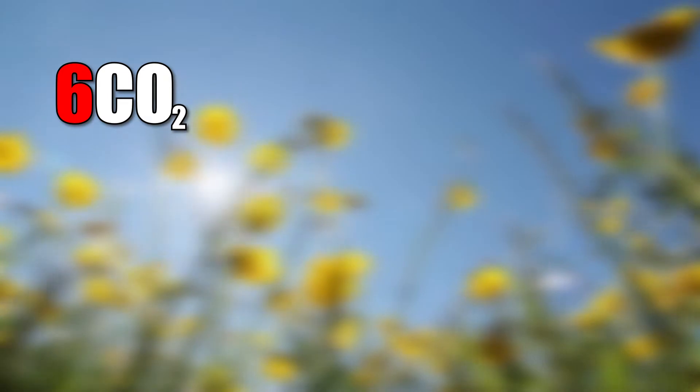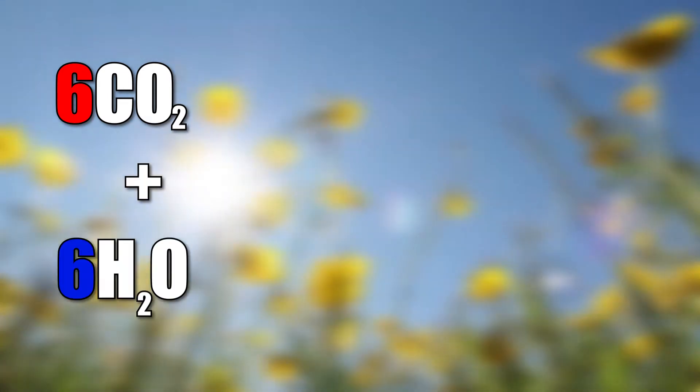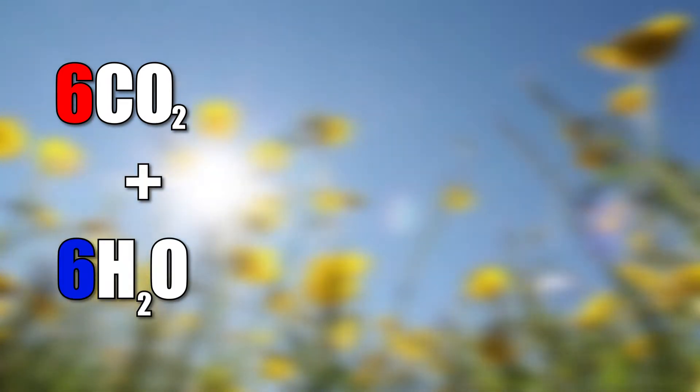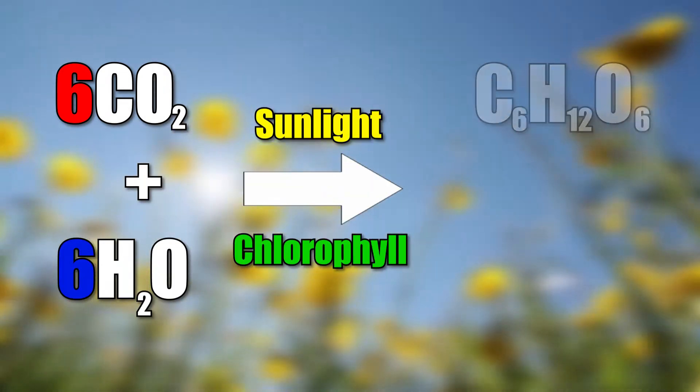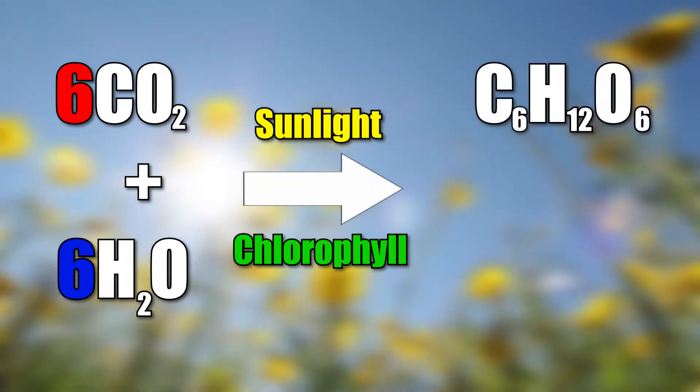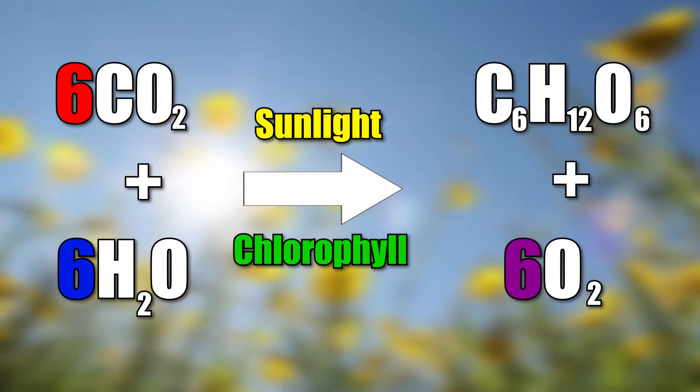If I was to show you the actual molecular makeup of this equation, it would look like this: six carbon dioxide molecules plus six water molecules become one glucose molecule and six oxygen molecules. And if I split these up into the basic building blocks, we can see how this reaction happens.